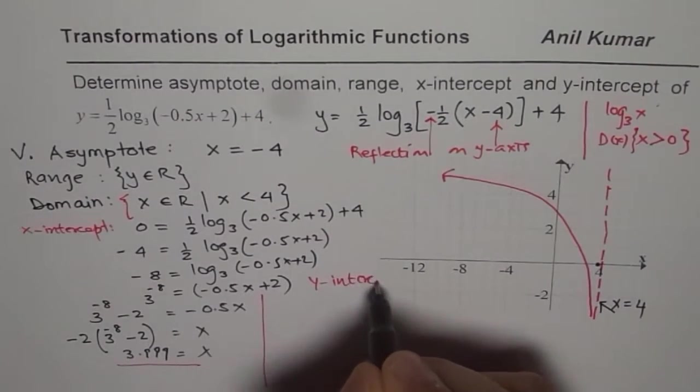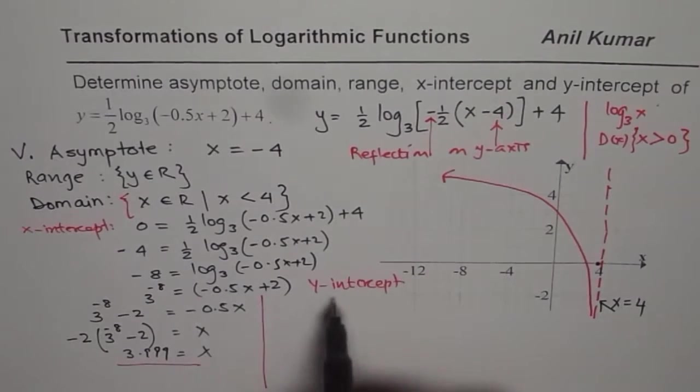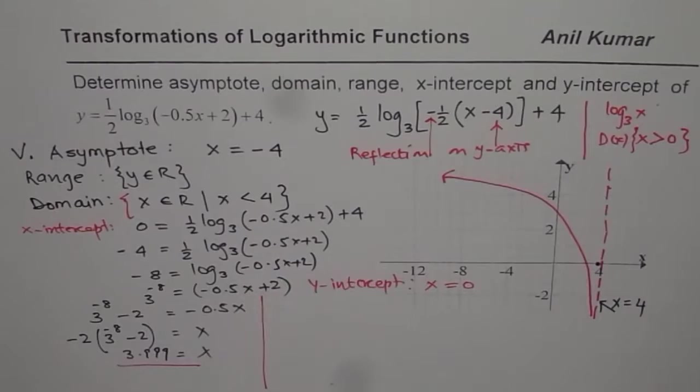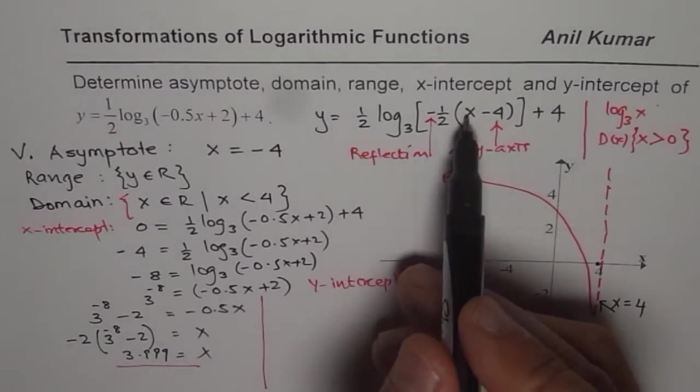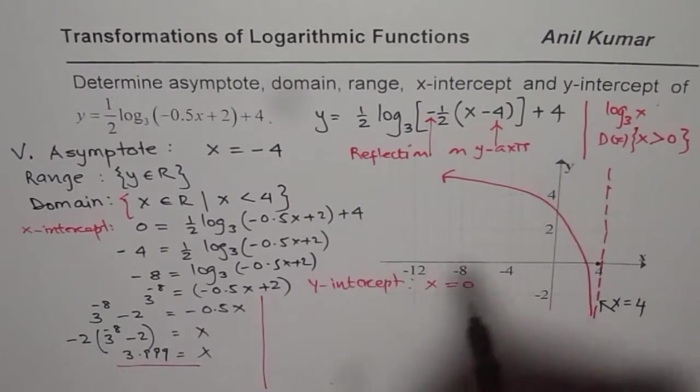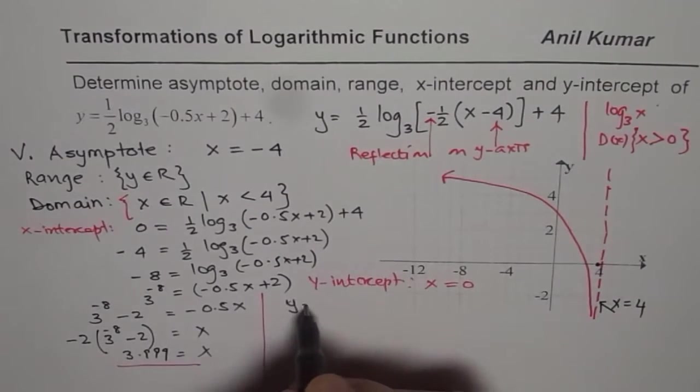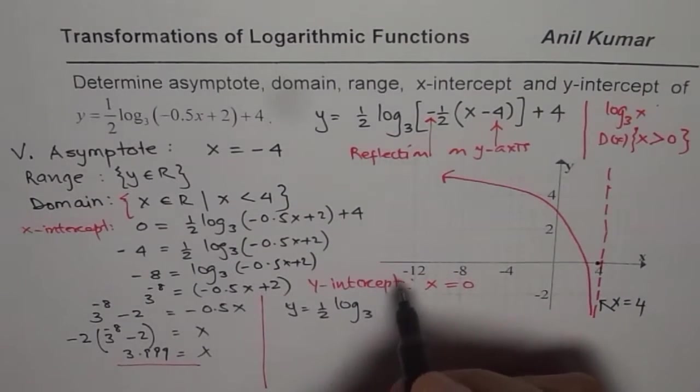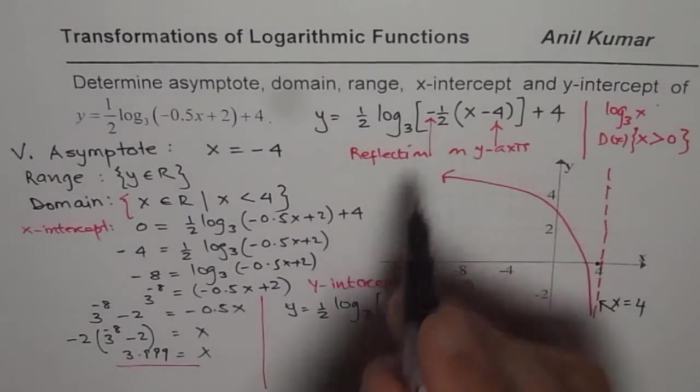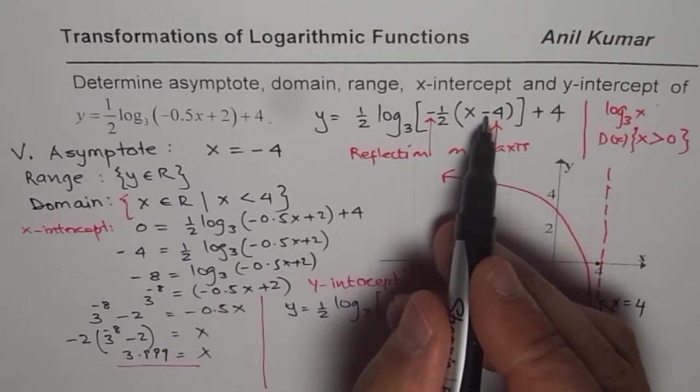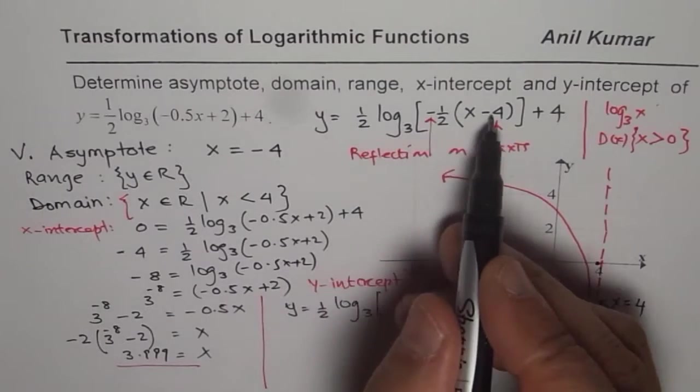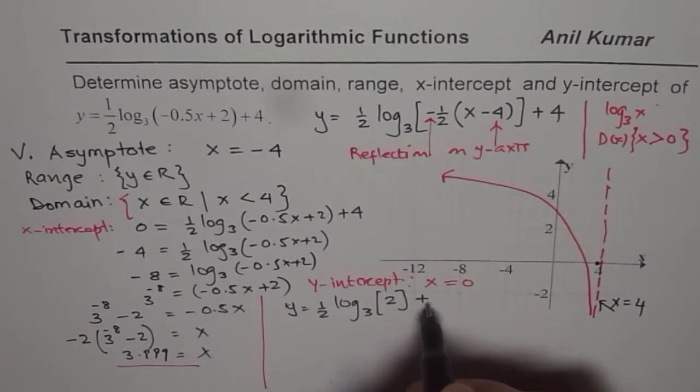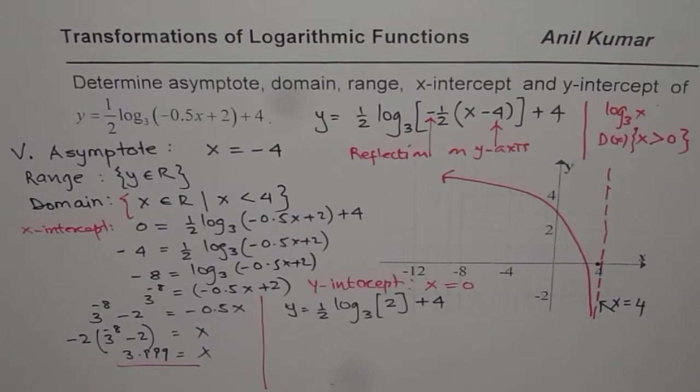Now let us also find the y-intercept. We are using this space now to find y-intercept. Y-intercept is a point where x equals 0. So we will substitute x equals 0 in our equation and solve for y. So y equals half of log base 3 of... when I write 0 here, I get minus times minus 4, which is plus 2. So we get log of 2 and then plus 4. This is what we get.